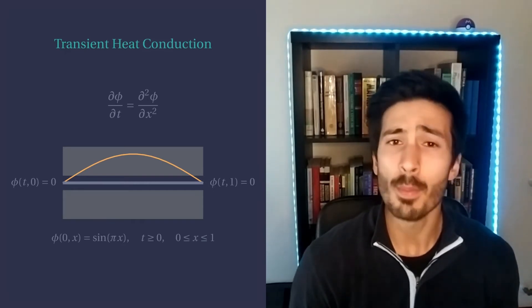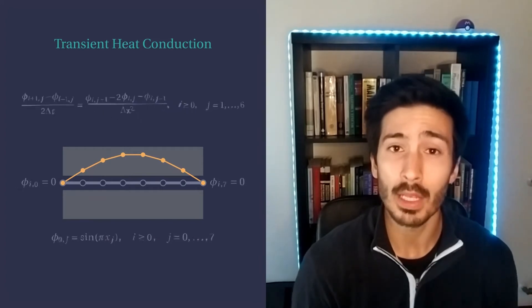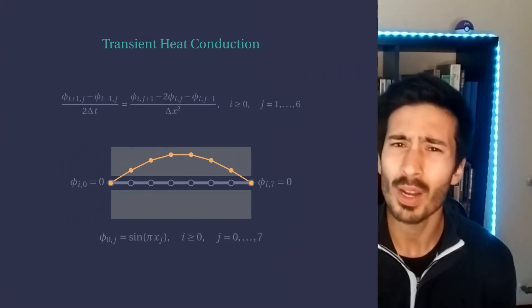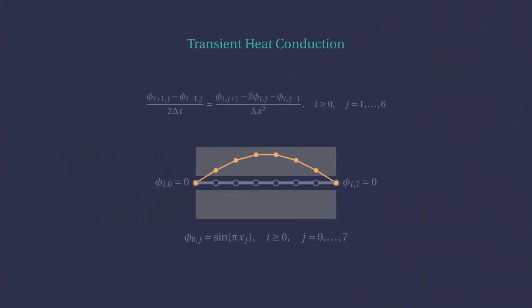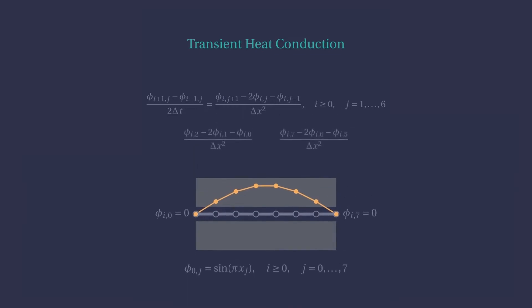We can just apply the most accurate formulas we have available and move on, right? Well, not so fast. If we try to apply the central formula for the spatial derivative, it's all good, since we have specified boundary conditions at both ends of the bar.